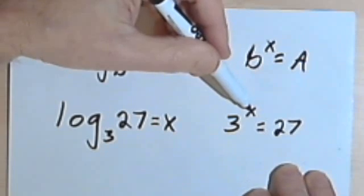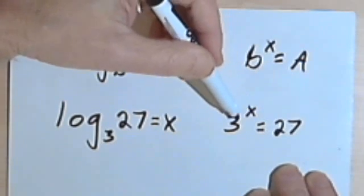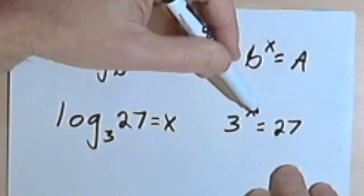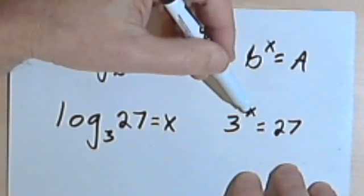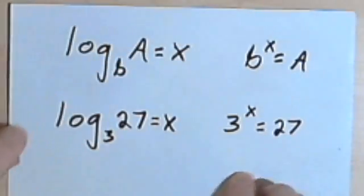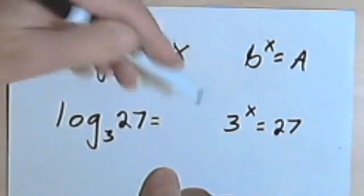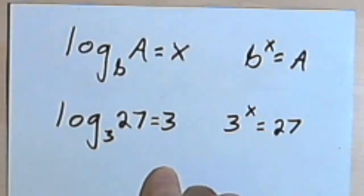Well, 3 to the first power is 3, 3 to the second power is 9, and 3 to the third power is 27. So that means x must equal 3. So the log base 3 of 27 equals 3.